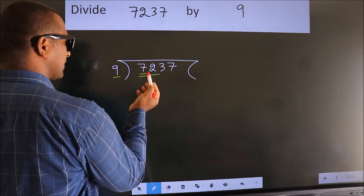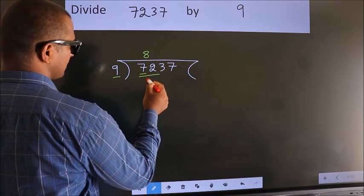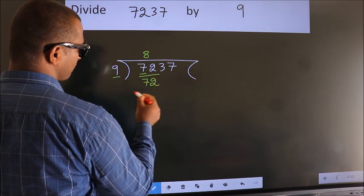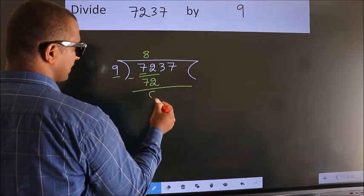When do we get 72? In 9 table, 9 8s, 72. Now, we should subtract. We get 0.